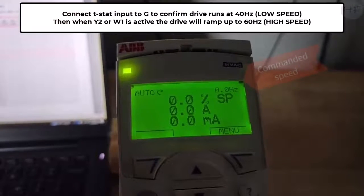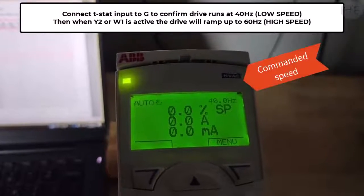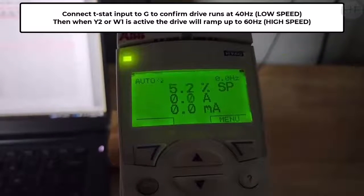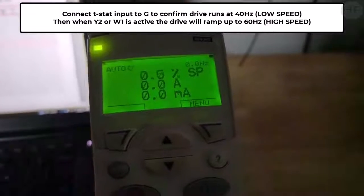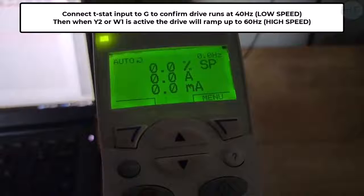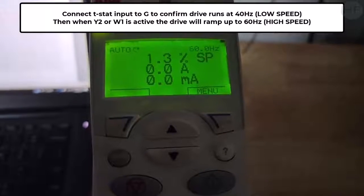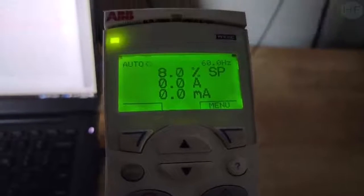Now you can test the drive by sending only a thermostat G signal to verify the drive commands 40Hz. Then send a thermostat Y2 or W1 signal to verify that the drive ramps up to 60Hz.